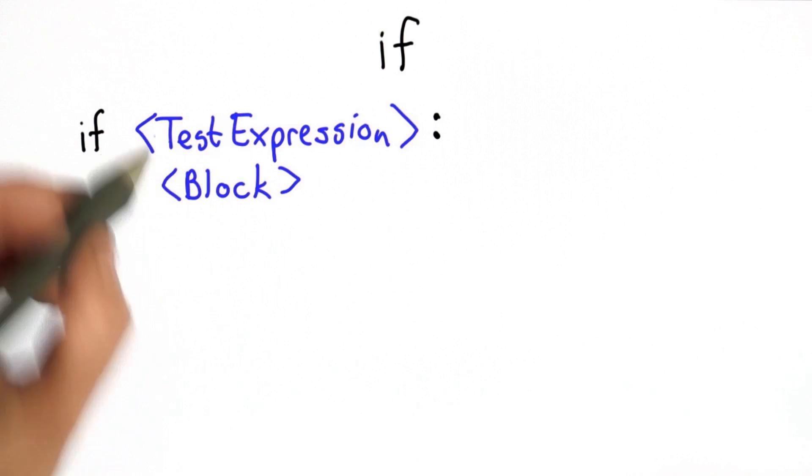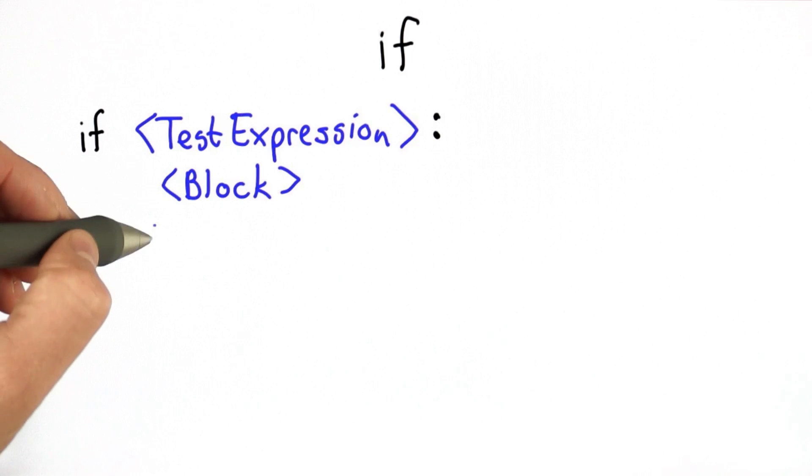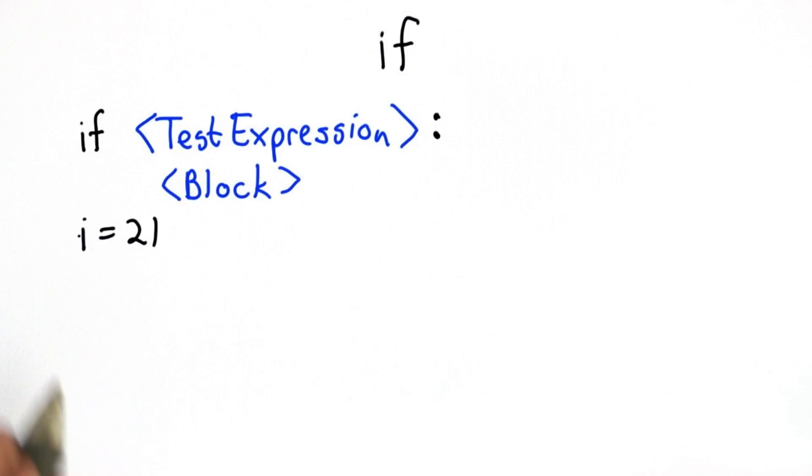If the test expression doesn't evaluate to true, then the block doesn't execute. And as with the procedure definitions, we know the end of the if because of indentation. All the statements inside the block are executed only when the test expression is true. The next statement that's not indented is going to be executed whether or not the test expression is true.